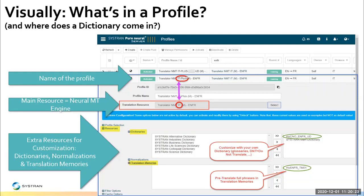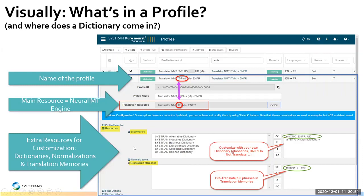Beyond IT — or IT-plus — whatever you want to call it, include the domain in the name with a dash or underscore to indicate what's at the base engine, but also that there's more to it. Down here are the extra resources such as dictionaries, translation memories, and normalizations — which are a special type of dictionary. That's where you configure them.